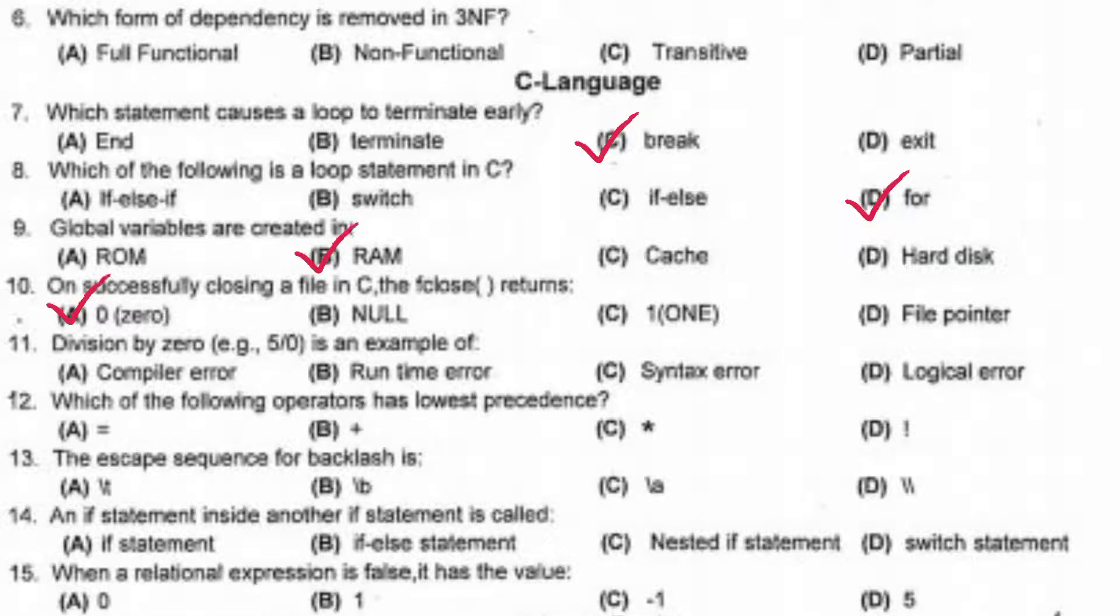Return zero. Divide by zero is an example of runtime error. Which of the following operators has lowest precedence? Equal. The escape sequence for backslash is option D.